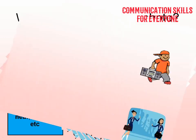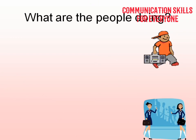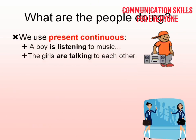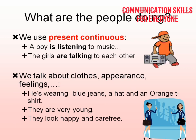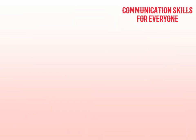For what people are doing, use the present continuous tense. For example: 'The boy is listening to music' because we can see he is carrying a tape recorder. 'The girls are talking to each other.' You can also talk about clothes, appearance, and feelings — for example: he is wearing blue jeans and an orange t-shirt; they are very young and look happy and carefree.